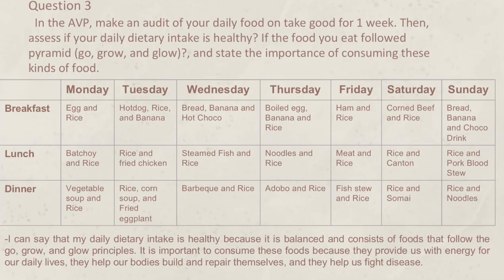Question number three: make an audit of your daily food intake for one week, then assess if your daily dietary intake is healthy — if the food you eat follows the food pyramid, the Go, Grow, and Glow. On Monday, breakfast was egg and rice, lunch was betchoy and rice, dinner was vegetable soup and rice. On Tuesday, breakfast was hot dog, rice, and banana, lunch was rice and fried chicken, and dinner was rice, corn soup, and fried eggplant.